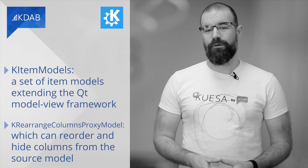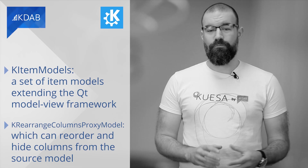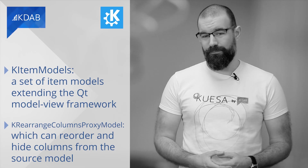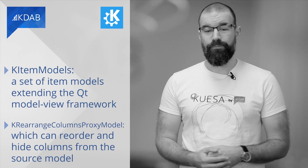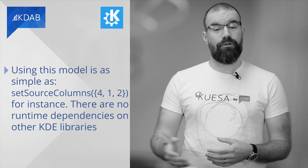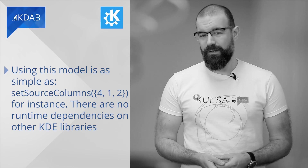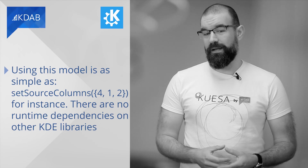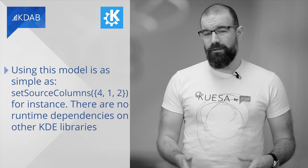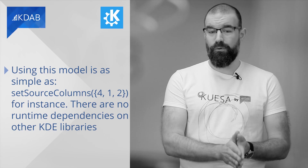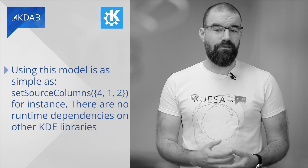KItemModels is a set of item models extending the Qt model-view framework. For example, KRearrangeColumns proxy model, which can reorder and hide columns from the source model. It allows you to select which columns in an existing model should be visible to the user and in which order. Using this model is as simple as calling set source columns with indices like 4, 1, 2. There are no runtime dependencies on other KDE libraries. At KDAB it is used extensively in our in-house business management application — for instance, in a window showing a table with many columns, the user can request a chart which only shows the most important information, and the proxy picks the useful columns for the chart.